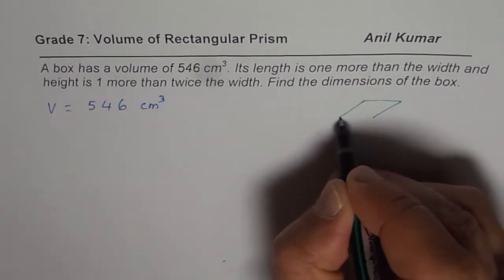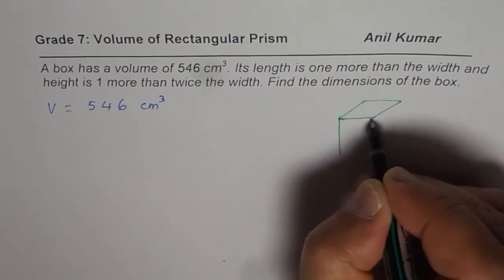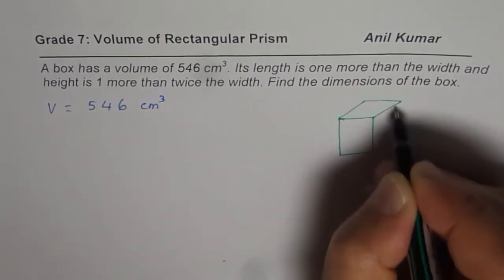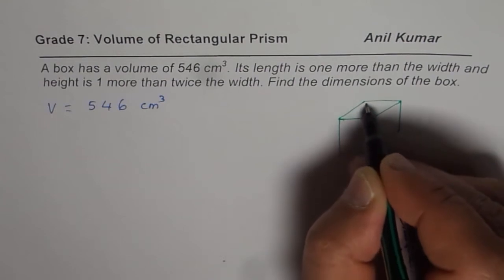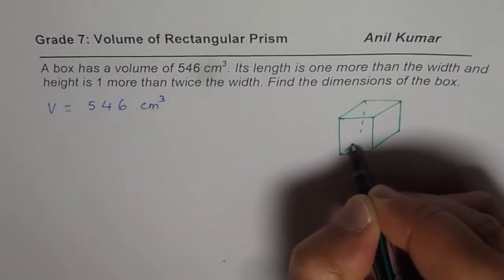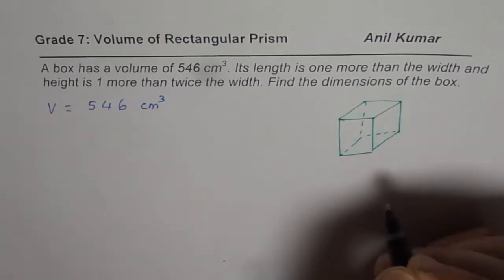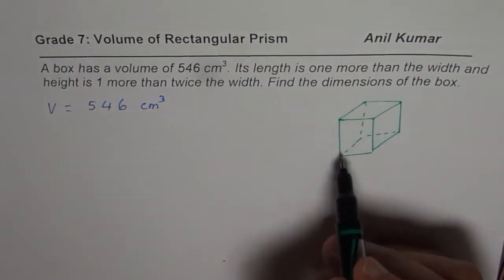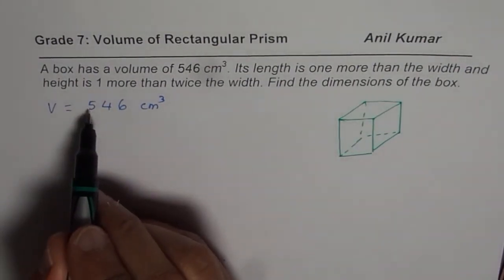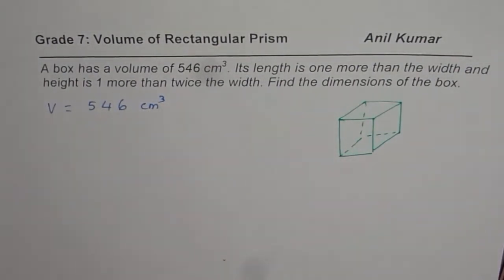So that is the top portion. And let's say that is the height of the box. And I will just close it like this. So that is the kind of box which we are looking into. We know that the volume of this box is 546 cm³.